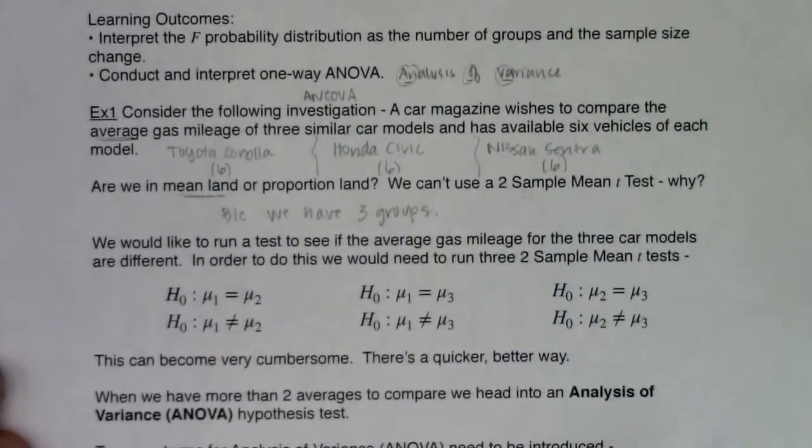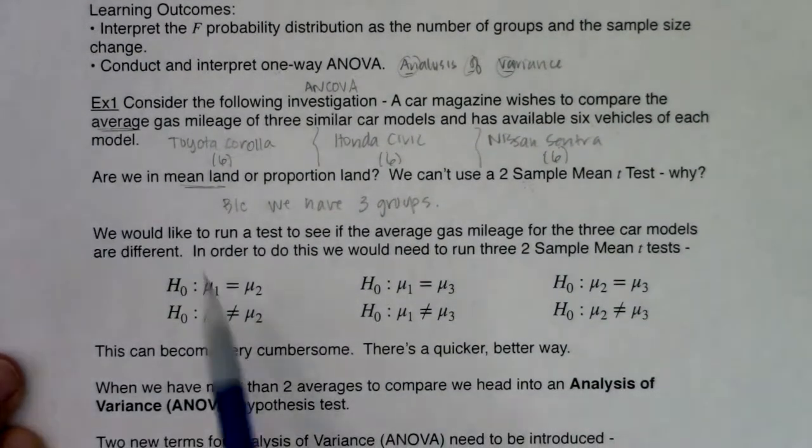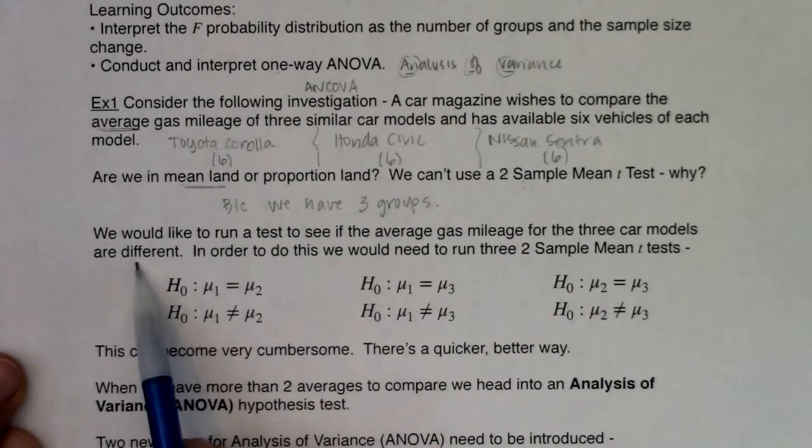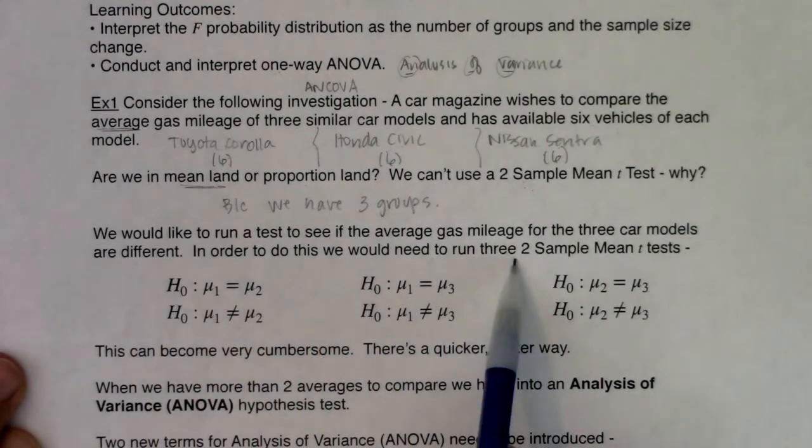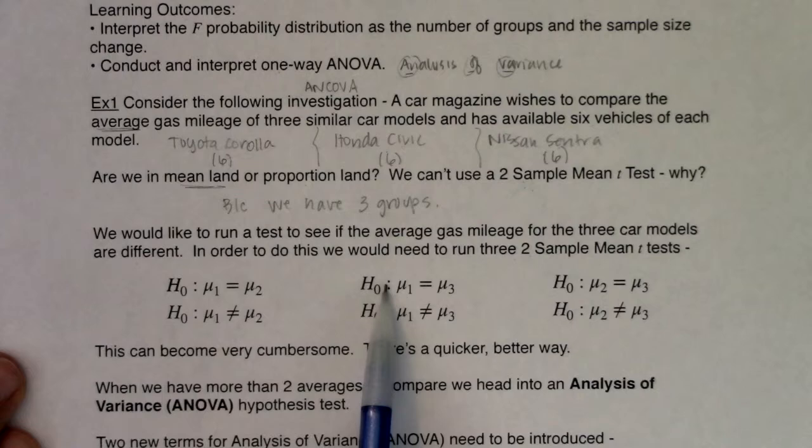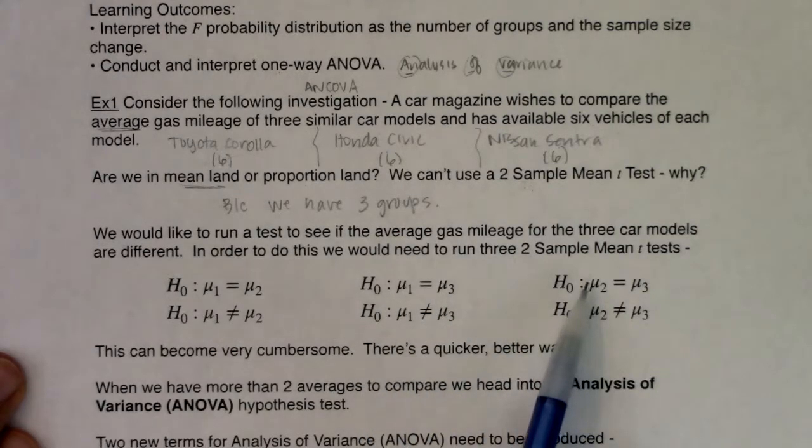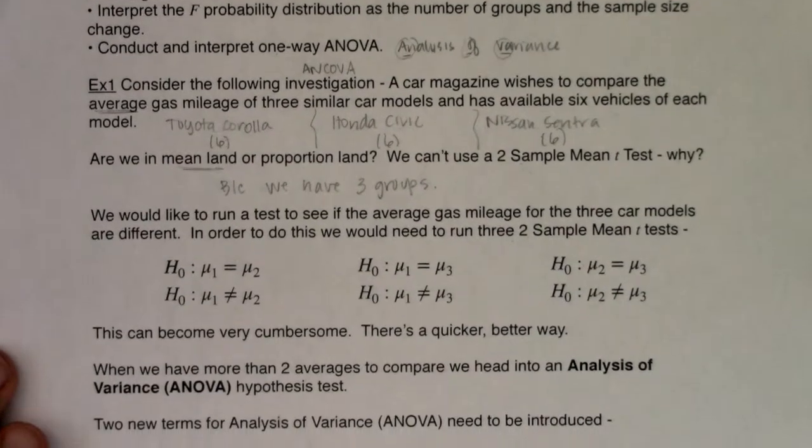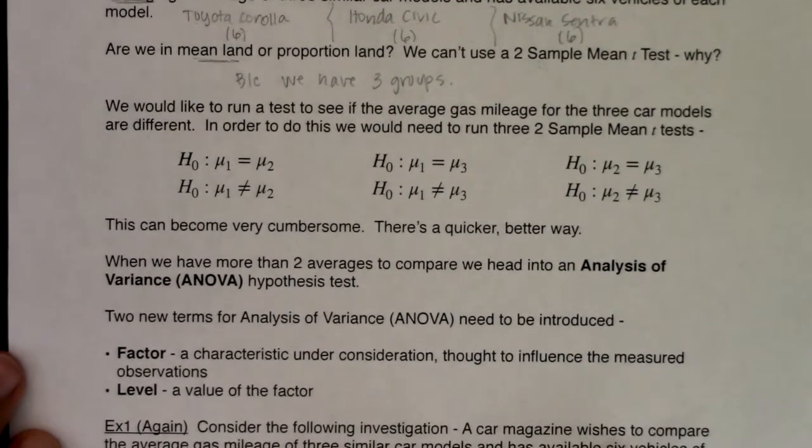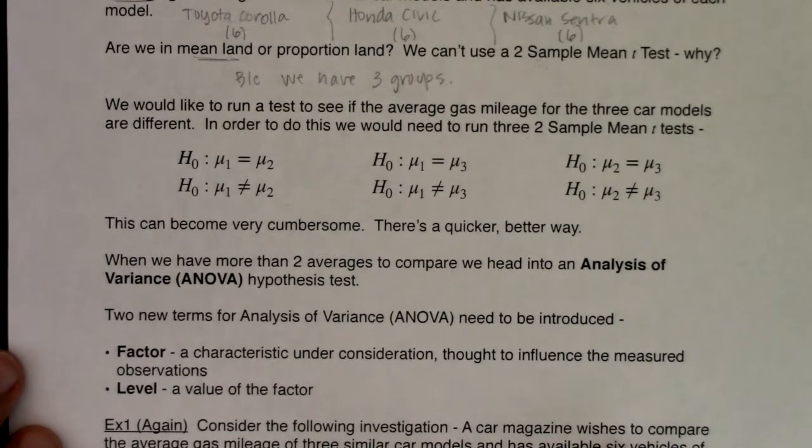So even with that I would need to run three separate two-sample mean t-tests and that would just be really, really cumbersome. So we came up with a different way of doing it. I already said some of this part out loud, but we would like to run a test to see if the average gas mileage for the three car models are different. In order to do this we would need to run the three versions of the two-sample mean t-tests. It's very, very cumbersome. And we came up with a better, quicker way.